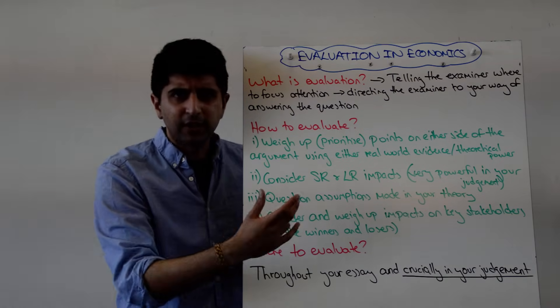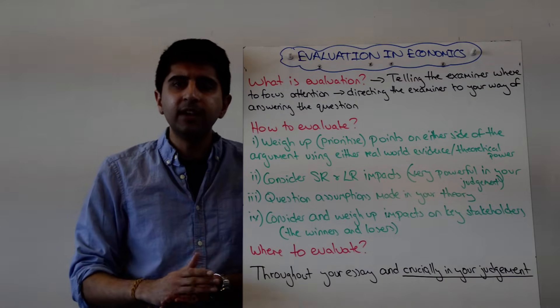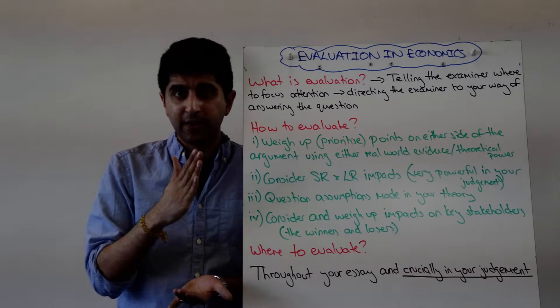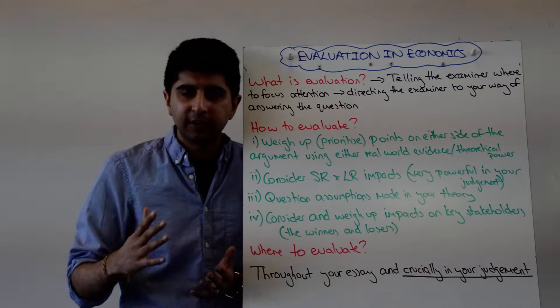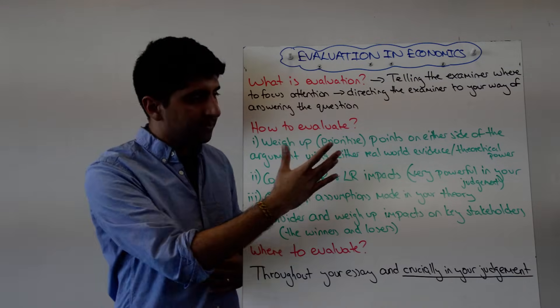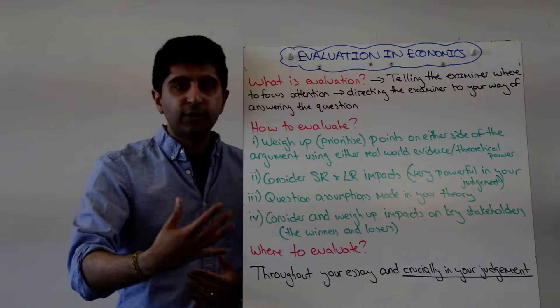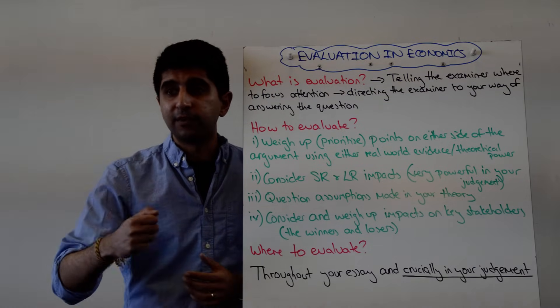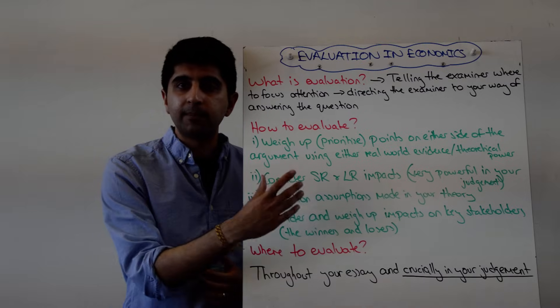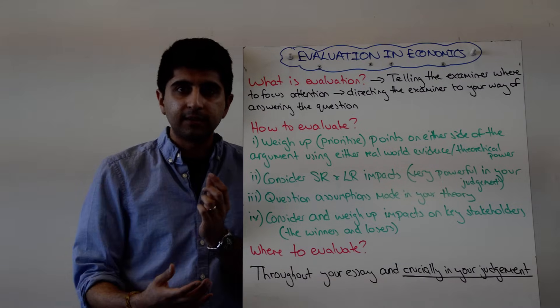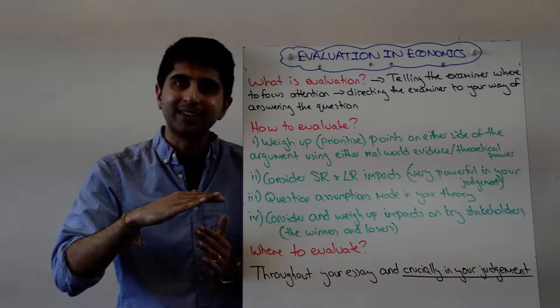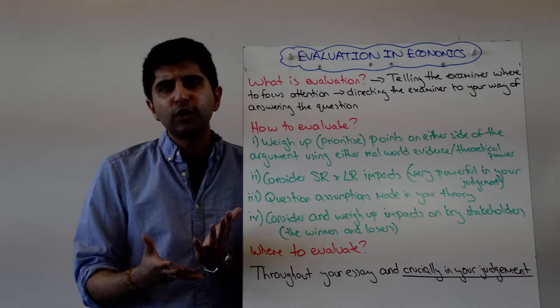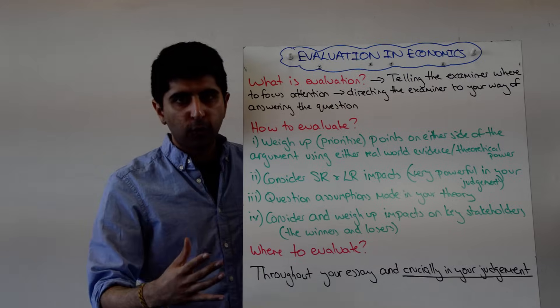And now here's an example for you. Indirect tax, you'll say, look, in the short run, it's quite ineffective in solving a given market failure because of very inelastic demand for certain goods and services. However, in the long term, because this tax generates revenue, that revenue can be used to subsidize alternatives, can be used to provide alternatives, can be used to provide information, which in the long term makes demand for whatever product more price elastic. Hence, in the long term, the tax will be more effective. So, short run and long run, you can always use whether it's micro or macro, for sure.